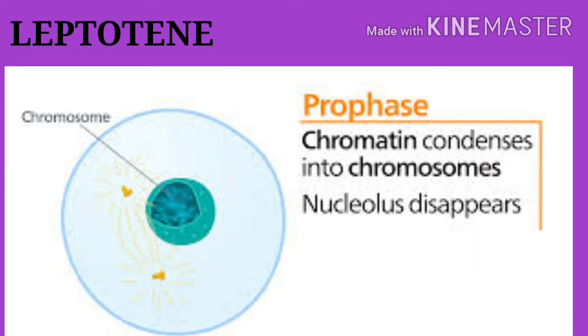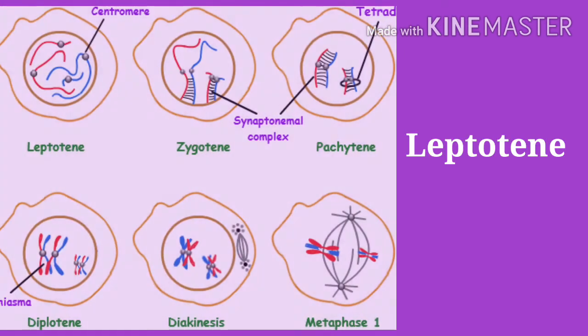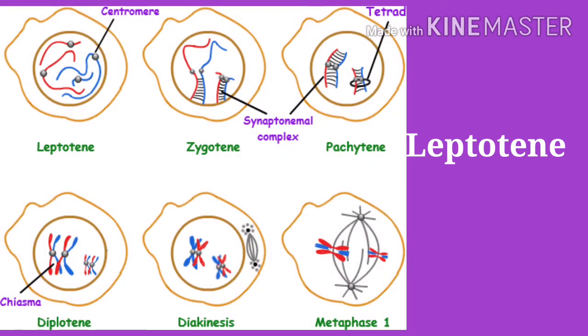In leptotene, chromatin threads condense to form chromosomes. Chromosomes are longest and thinnest. On chromosomes, bead-like structures called chromomeres are present. All the chromosomes in the nucleus remain directed towards centrioles and appear like a bouquet.